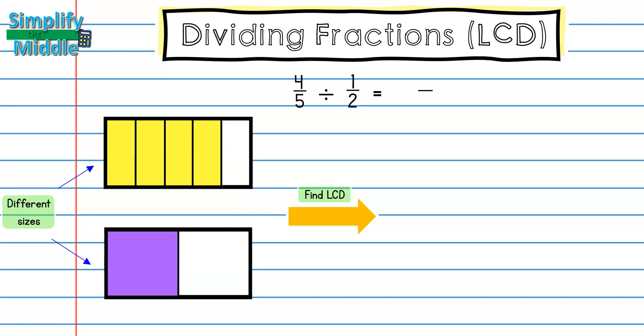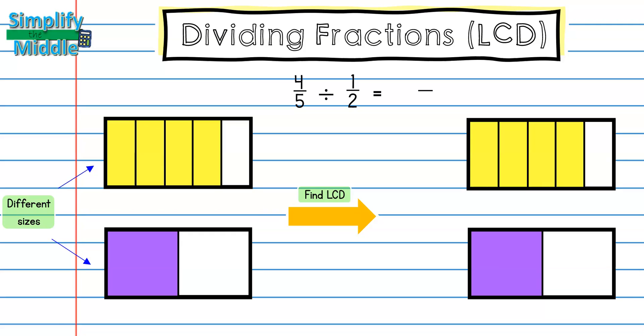The least common denominator between five and two is ten. We can easily convert our fifths into tenths by cutting each of our fifths in half. When I cut this half, notice that it lines up exactly right here. So that shows me that I have one, two, three, four, five pieces that are the same thing as this half.